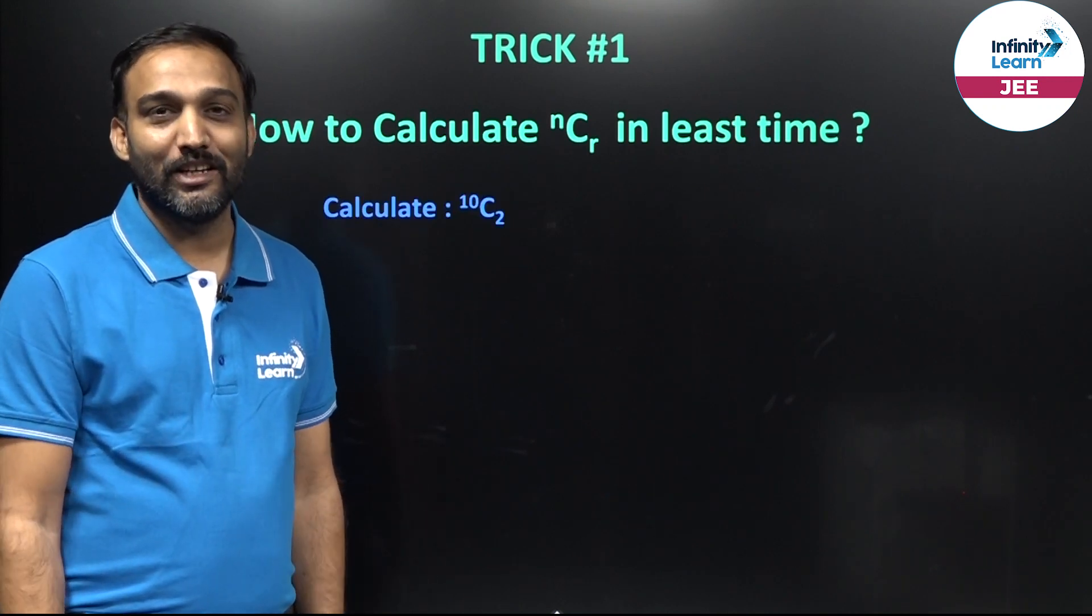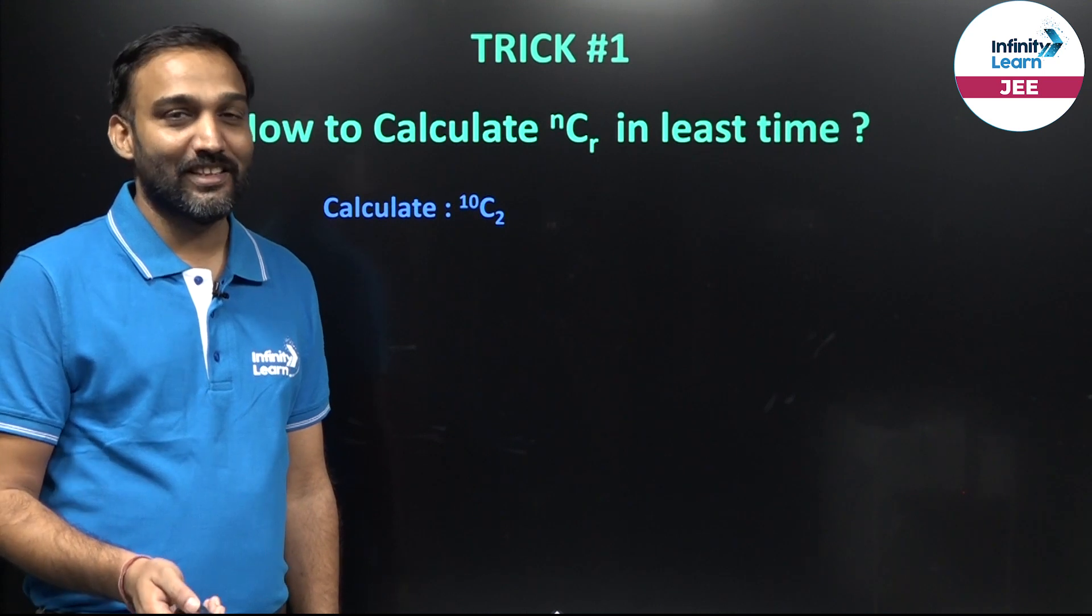For example, if we have 10C2, observe the head and the tail. Head over here is 10 and tail is 2.